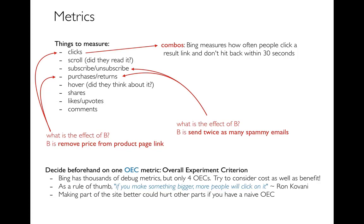You want to consider the cost as well as the benefit. Ron Tofoni made the point that if you make something bigger, more people will click on it — simple as that. But there are downsides to making everything bigger: other things get shoved off the page and you have to scroll down, and maybe you want people to click on those things too. You have limited real estate on your site. So maybe think about click-through rate divided by how many pixels or square inches you need to actually show the content.